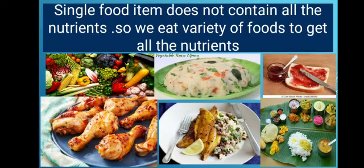Our body needs nutrients. The main five nutrients are carbohydrates, protein, fats, vitamins and minerals. A single food cannot consist of all five components of nutrients, so we need different varieties of food in our daily life to fulfill these nutrient requirements. That is why we eat different varieties of food.